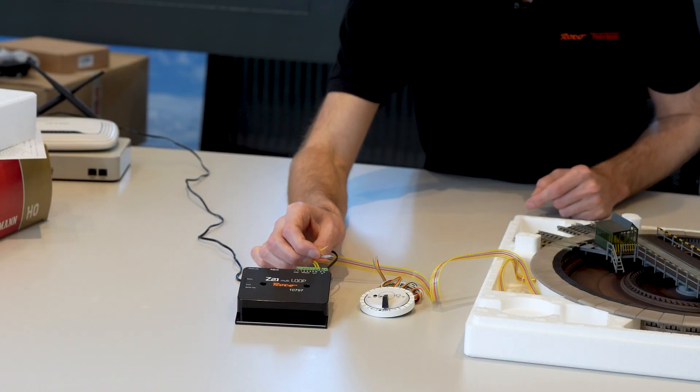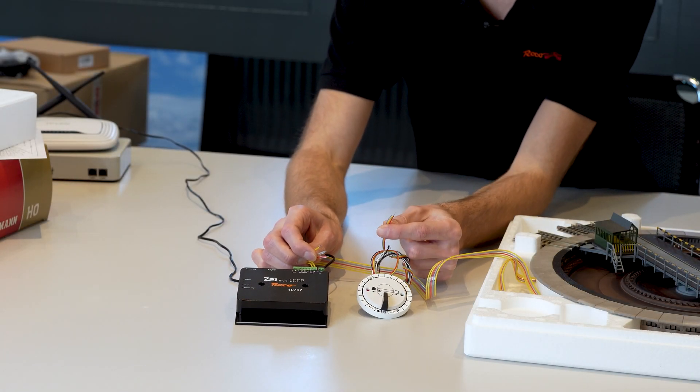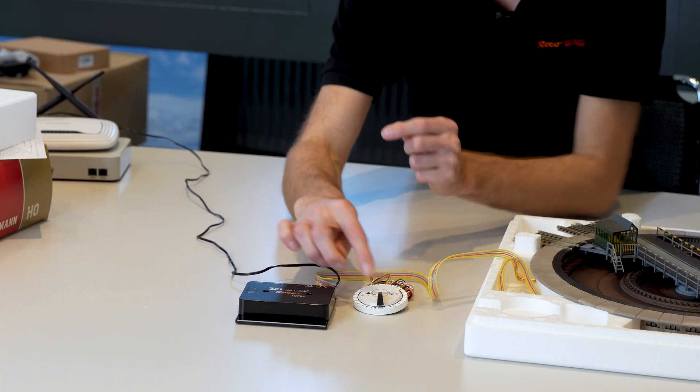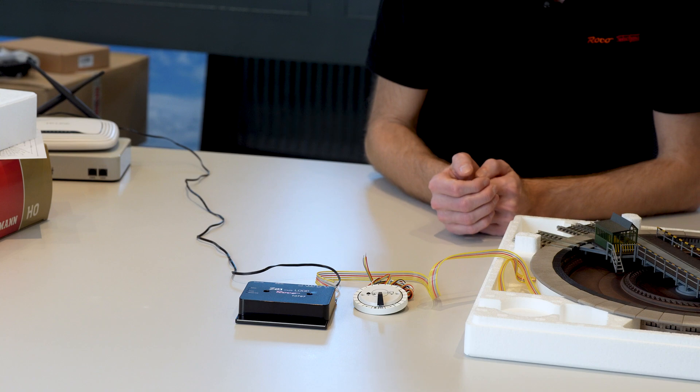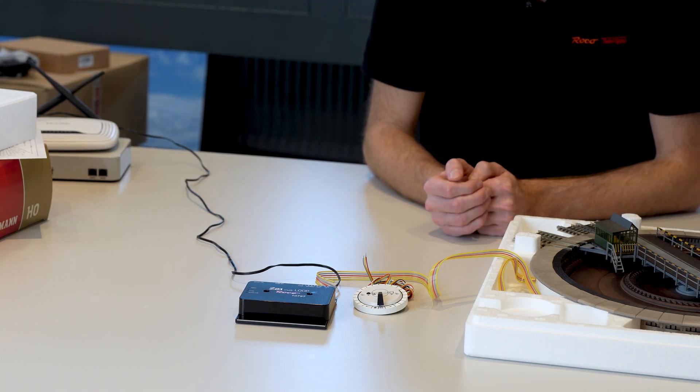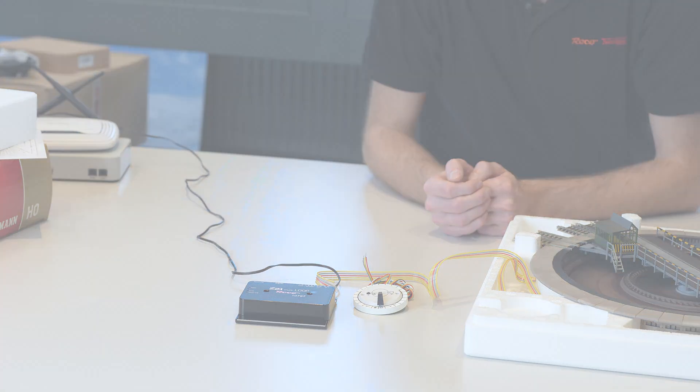The other three cables are connected to the three cables from the handheld controller. The turntable can then be controlled using the handheld controller and the reverse loop module provides the digital power supply including polarity reversal for a 180 degree turn.